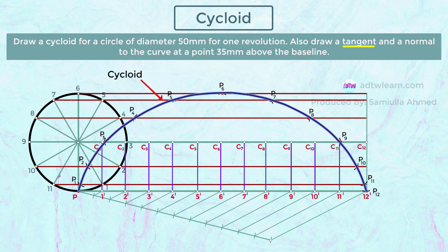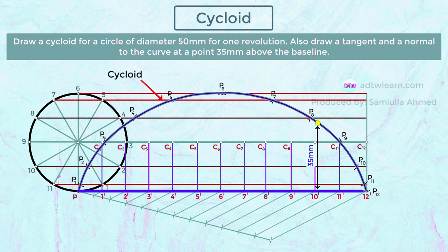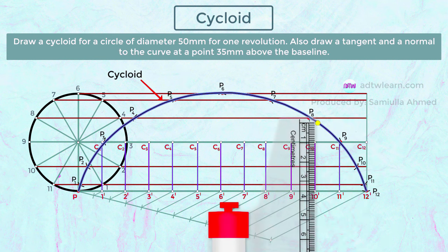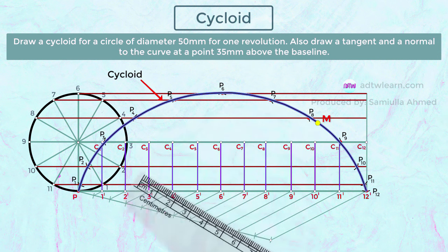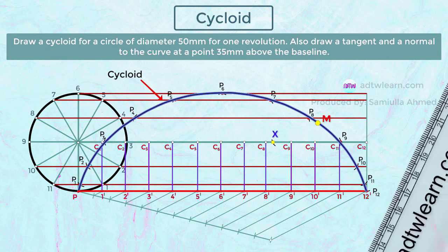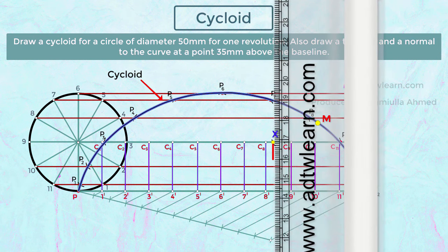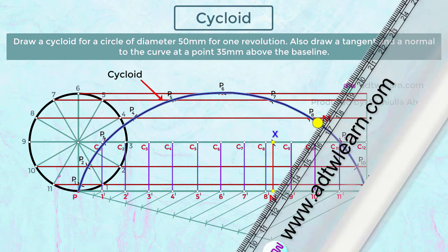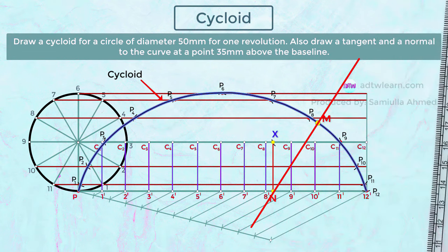The next part is to draw a tangent and a normal to the cycloid at 35 mm above the baseline. Mark a point 35 mm above the baseline using the roller scale — call this point M. Take the radius of the circle, keep the compass on M, and mark an arc on the centerline. Mark this intersection as point X. Then draw a vertical line from X down to the baseline. Mark that intersection as N, and draw the line through N and M — this line is the normal to the curve.